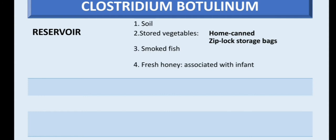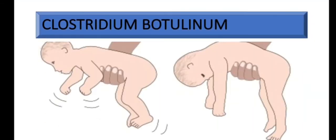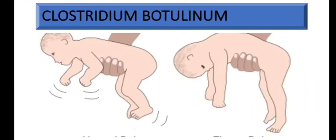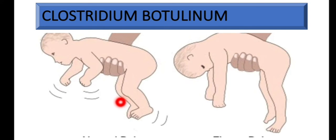For infants, there is a specific presentation. The disease is also called floppy baby syndrome. If you check here, this is a normal baby — when you hold the baby like this, this is the normal position. But a child with botulism will be like this — showing the flaccid, floppy posture.